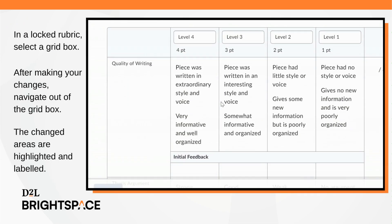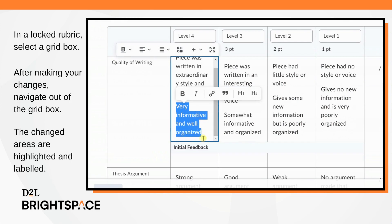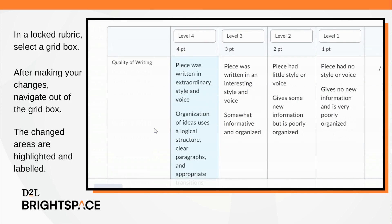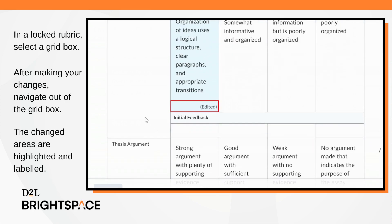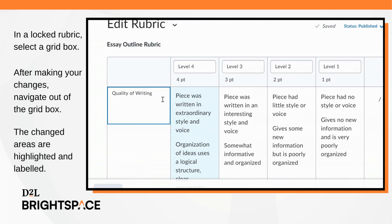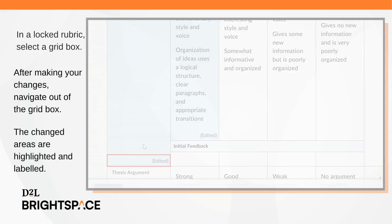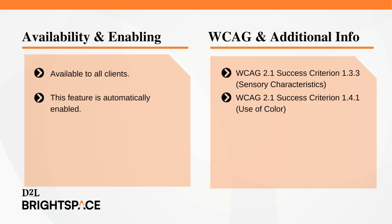In Rubrics, navigate to a locked rubric you wish to edit and select a grid box. Enter the changes you wish to make. Once completed, navigate away from the grid box by clicking elsewhere on the page. Any changed areas are highlighted blue and labeled as edited. The rubrics feature is available to all clients and is automatically enabled.